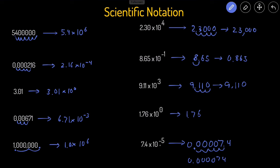That's how you do scientific notation problems. The main thing to remember: if your exponent is positive, then the number is greater than one — it's a larger number. And if the exponent is negative, then the number is less than one — it's a smaller number.